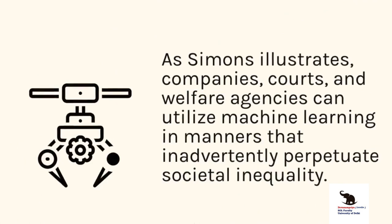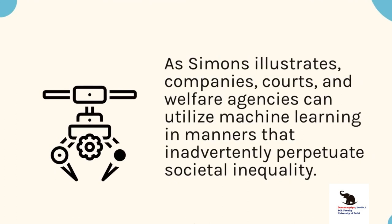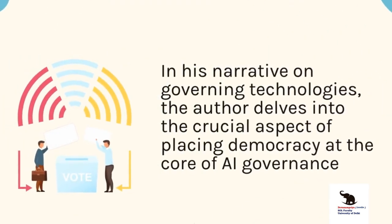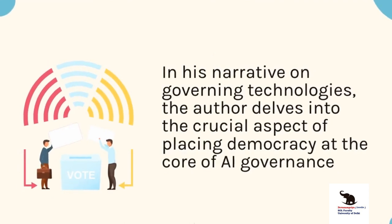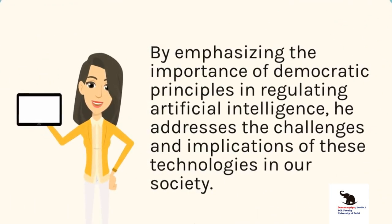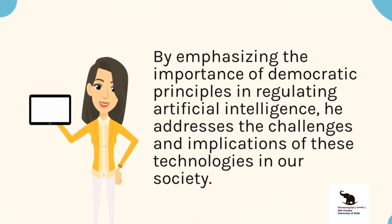As Simons illustrates, companies, courts, and welfare agencies can utilize machine learning in ways that inadvertently perpetuate societal inequality. In his narrative on governing technologies, the author delves into the crucial aspect of placing democracy at the core of governance. He contends that the act of prediction itself holds political significance. By emphasizing the importance of democratic principles in regulating artificial intelligence, he addresses the challenges and implications of these technologies in our society.